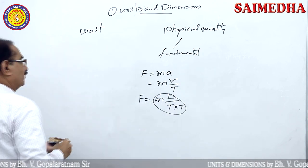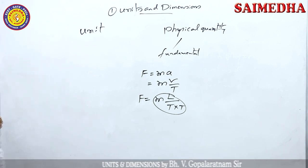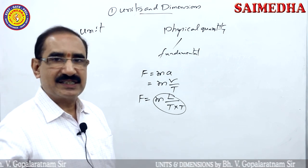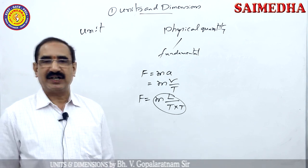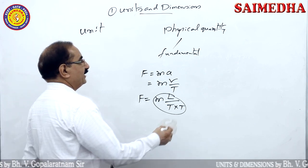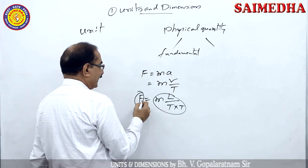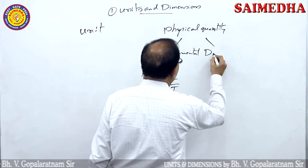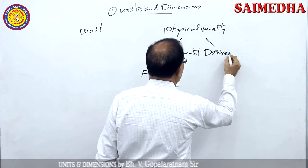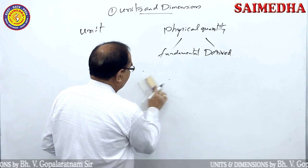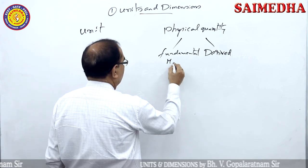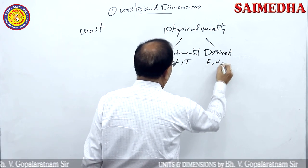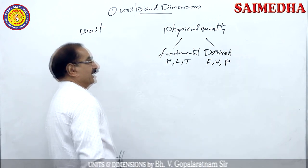Fundamental physical quantities are those which are independent. Force can be derived from fundamental physical quantities — those are called derived physical quantities. Fundamental physical quantities include mass, length, and time. Derived physical quantities include force, work, and power.